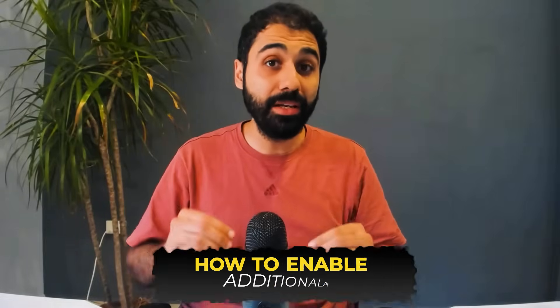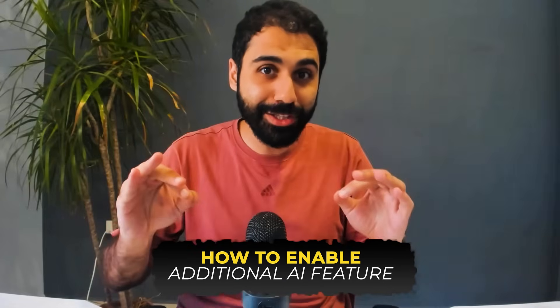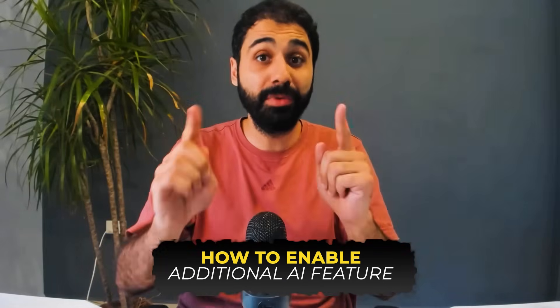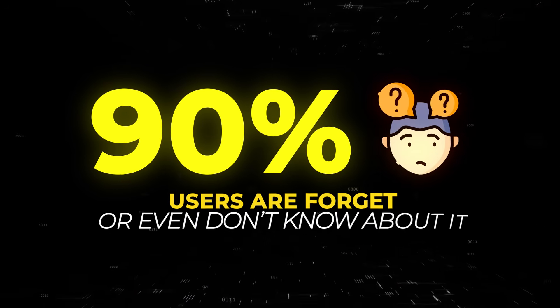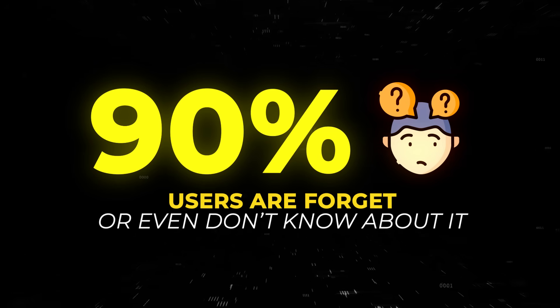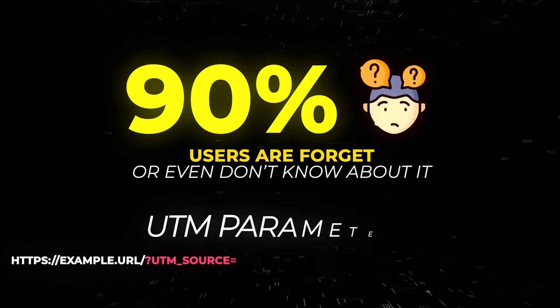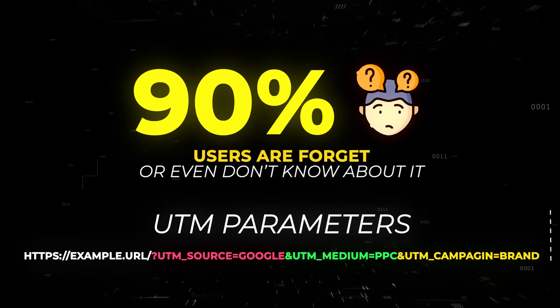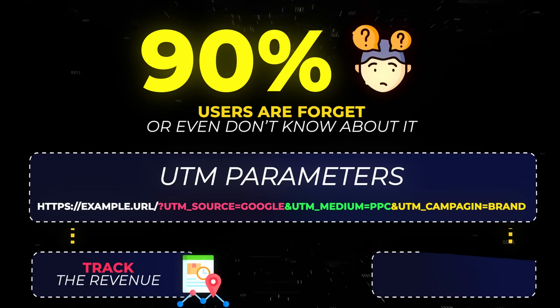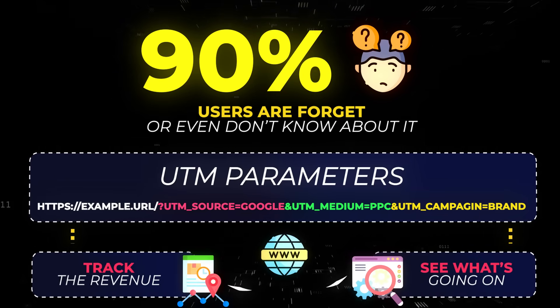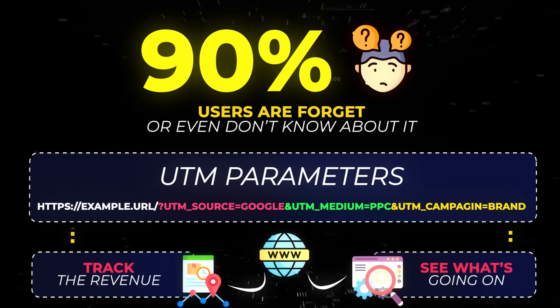We are not done yet. I want to show you how to enable the additional AI feature in this dashboard. But before that, I want to talk about something really critical that 90% of users forget or don't know about — UTM parameters. This is what allows us to track the revenue and see what's going on on your website. Without it, this dashboard will not work.